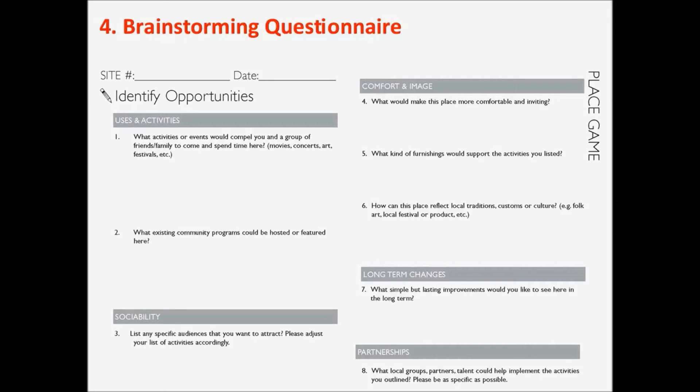Question three is about sociability — thinking about specific audiences that should be attracted. For example: youth, seniors, families with kids, teens, Spanish speakers or other non-English language speakers, bicyclists, or kids interested in skateboarding. There are so many different groups that could be listed, and you should encourage people to run with it and think about audiences that may not be typical for a library event. It's a great opportunity to do that.